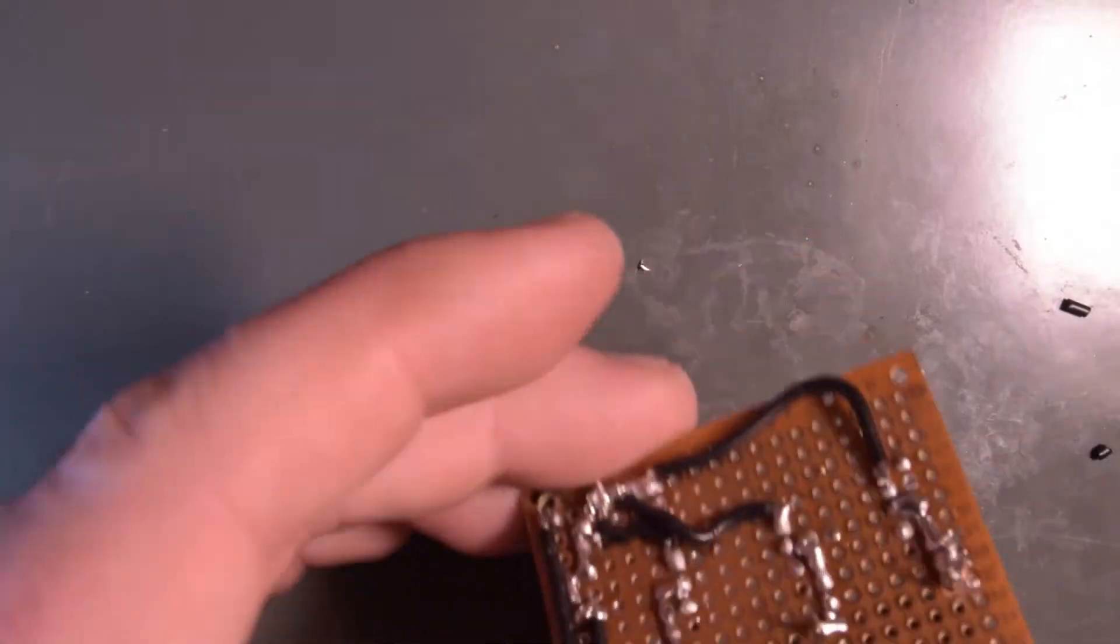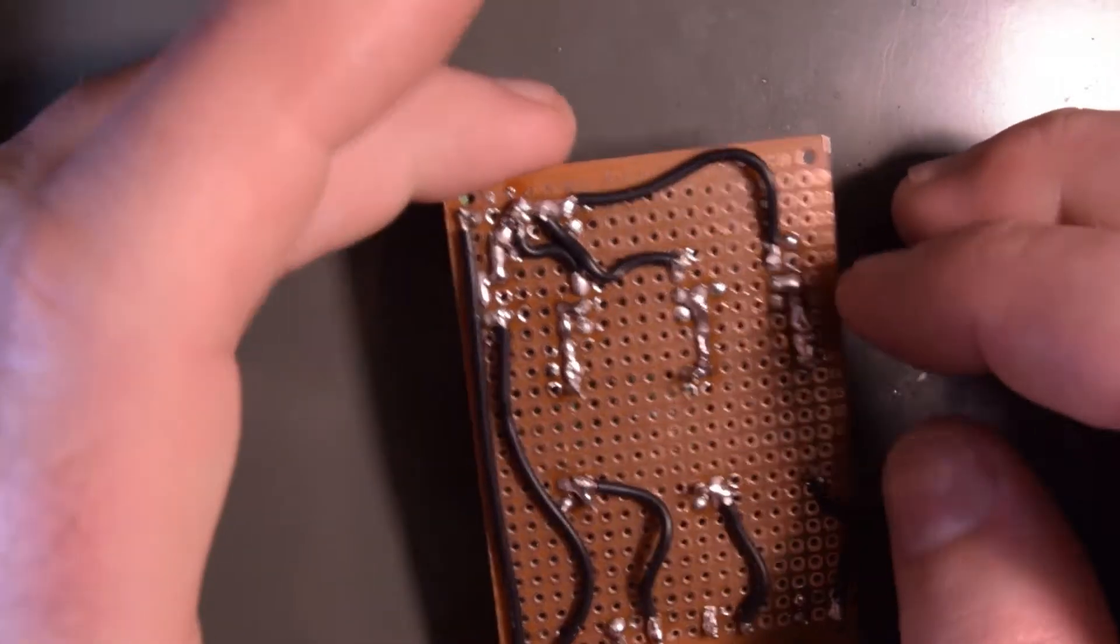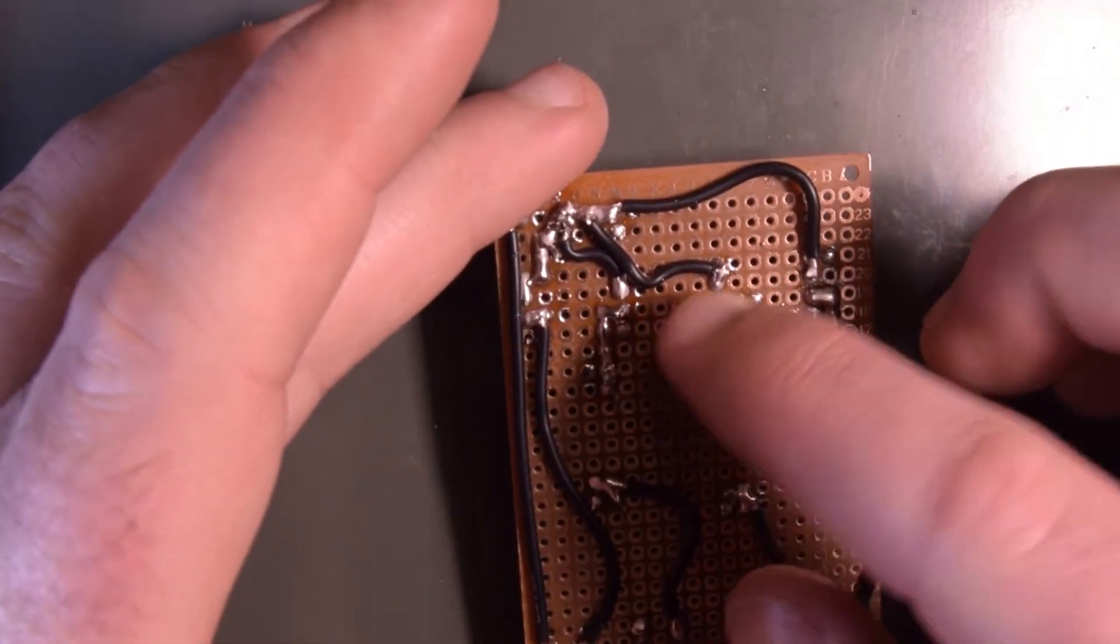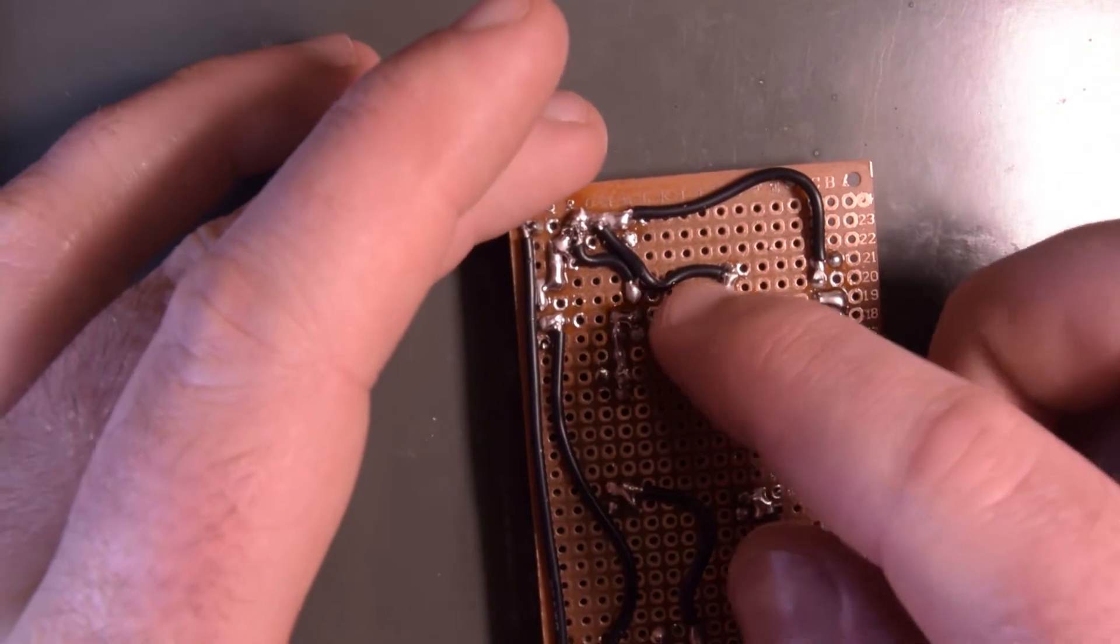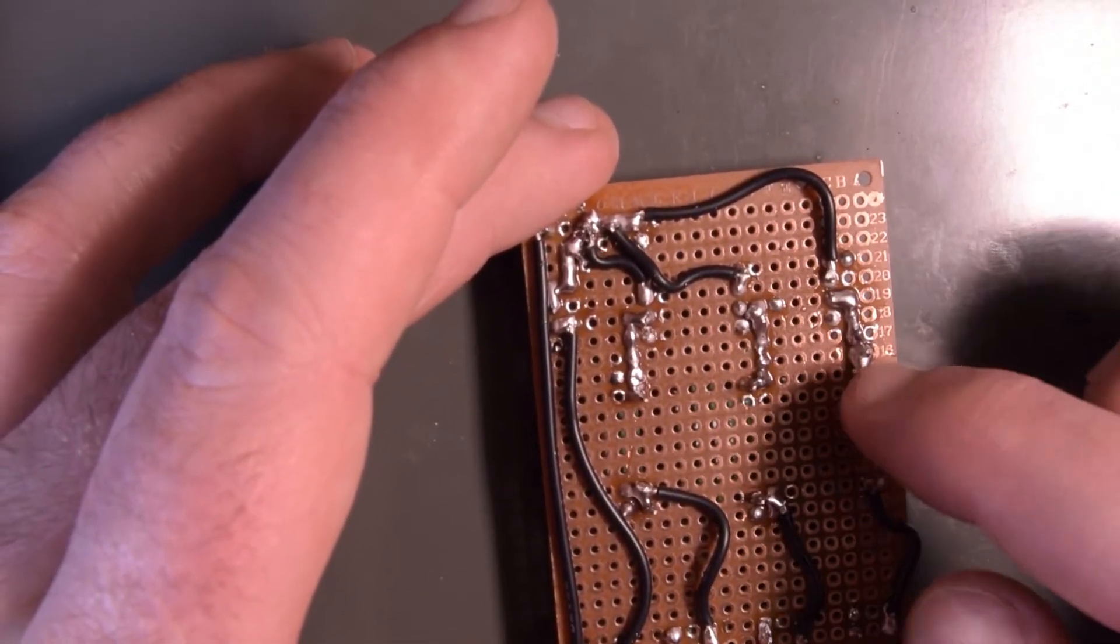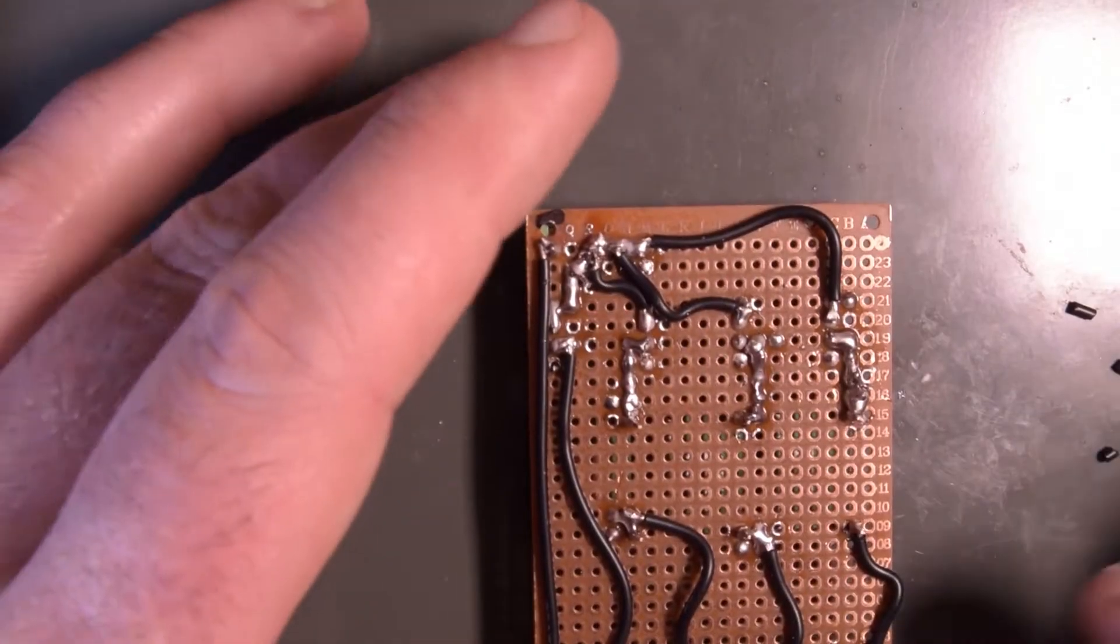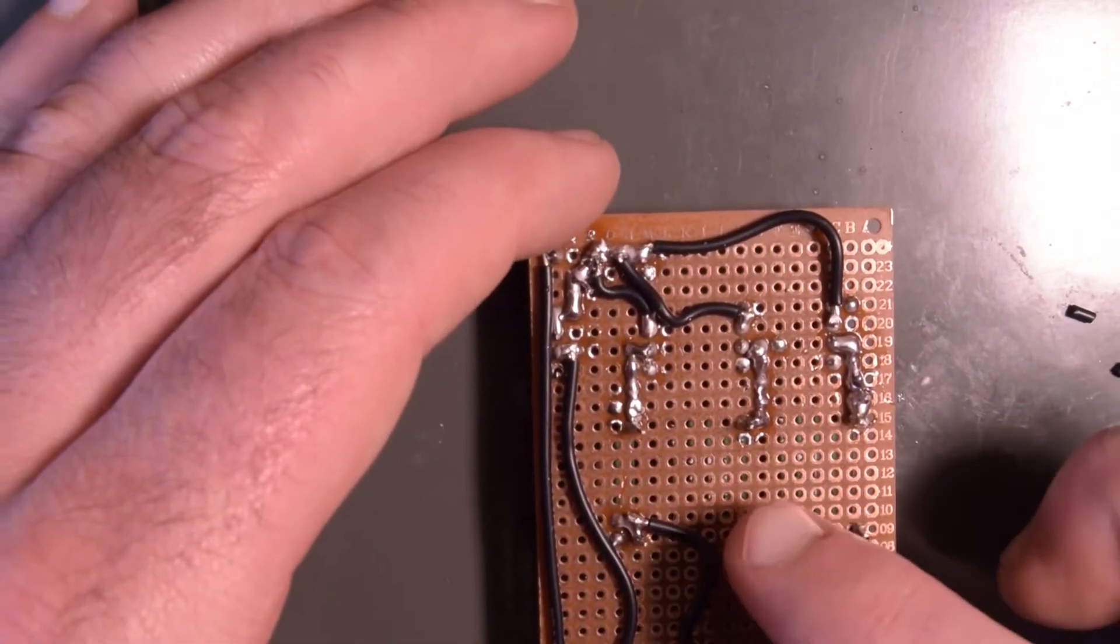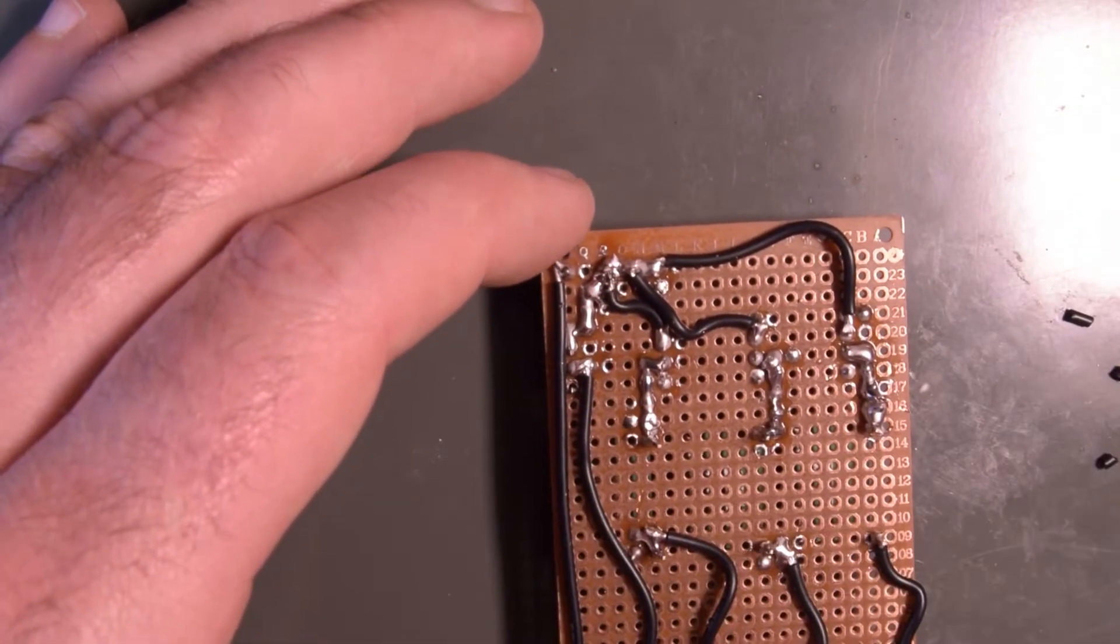So now all the positives should be linked, so that's good. Positive from switch middle pin, switch middle pin to here, switch middle pin to there, switch middle pin to there. That is nice. Then we've got positive to here, positive to here, positive to here. This one just goes straight through, okay that's good.